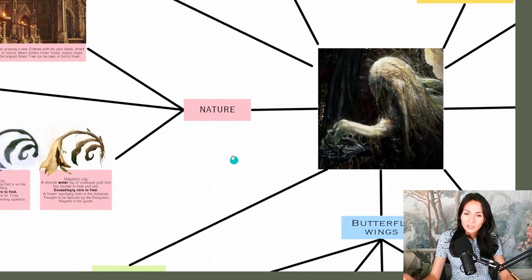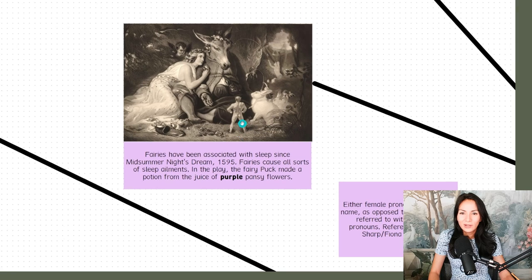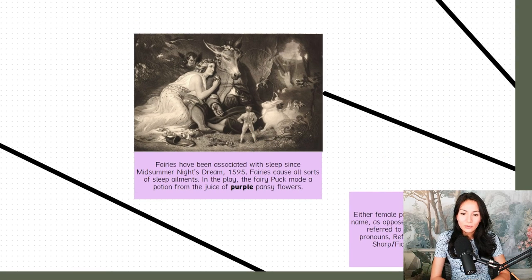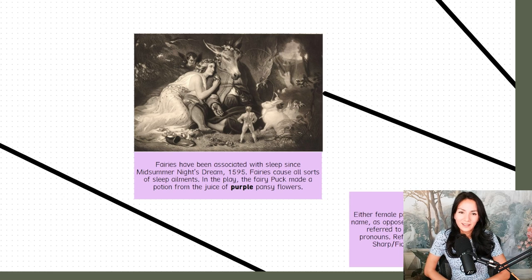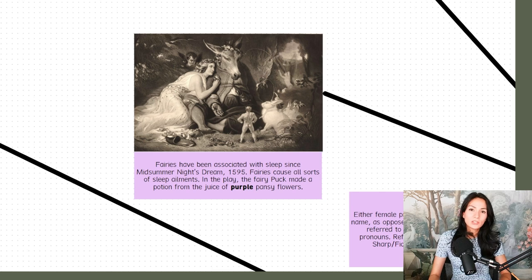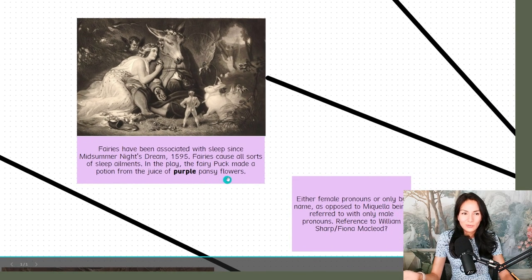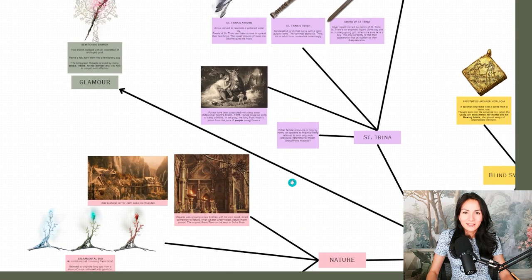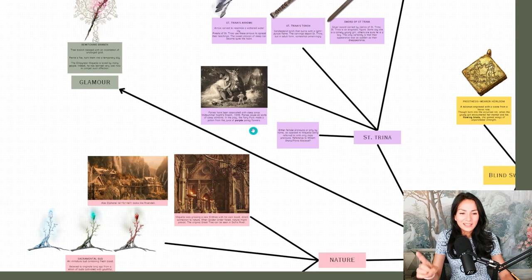Fairies are also associated with nature ever since A Midsummer Night's Dream. William Shakespeare wrote this play in 1595. The fairies in A Midsummer Night's Dream were very much involved with having control over nature. The fairy Puck made a love potion that he put on the eyes of people who were sleeping. It was a potion made out of purple pansy flowers.